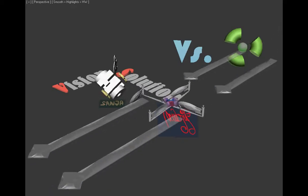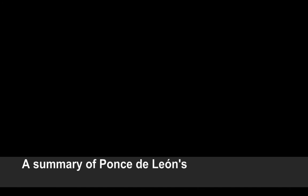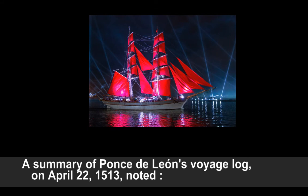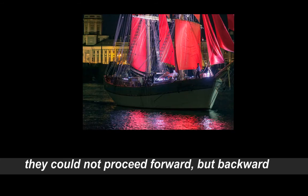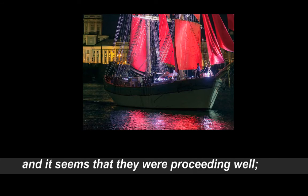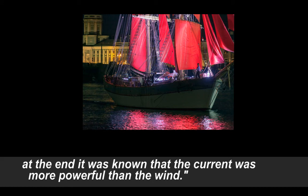H202 cross flow turbine versus nuclear power. Phase 4: Vision and solution. A summary of Ponstilian's voyage log on April 22, 1513, noted a current such that although they had great wind, they could not proceed forward but backward, and it seems that they were proceeding well. At the end it was known that the current was more powerful than the wind.